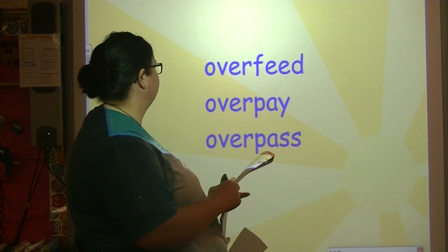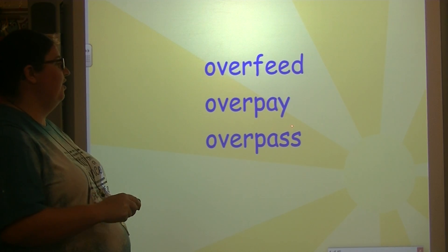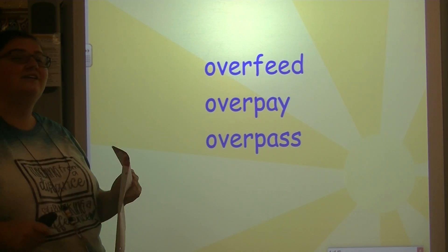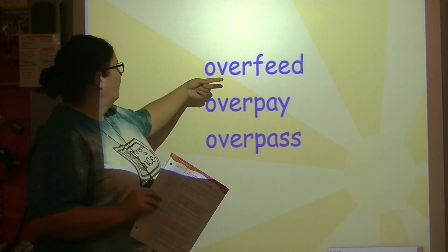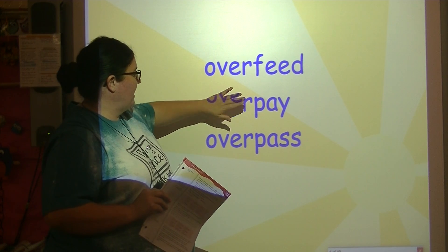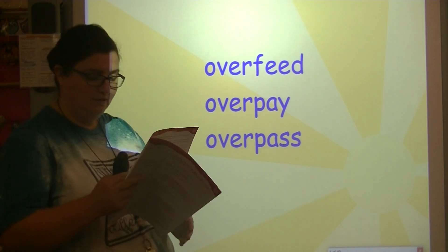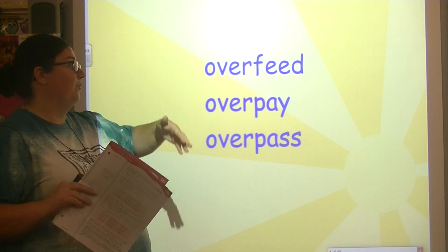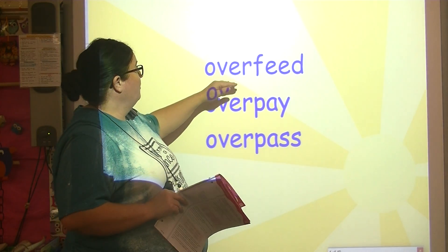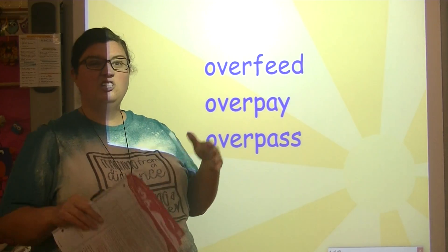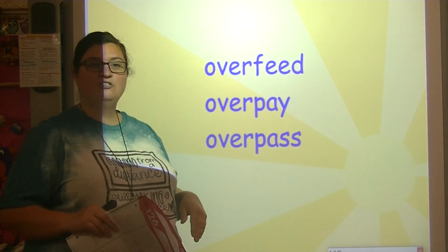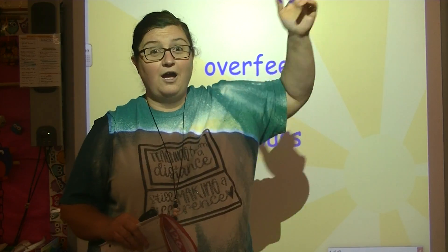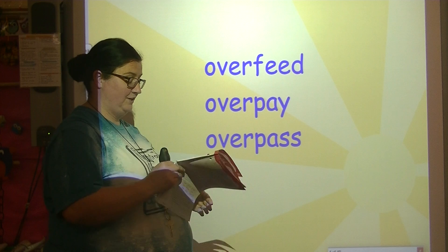Here's another set: overfeed, overpay, overpass. What is the prefix in these? Over — because if we cover it up, we have feed, pay, and pass. Same root words. What do you think 'over' may mean? Too much, or beyond, or above. So overfeed means you feed it too much, overpay means you paid too much, and an overpass is when you go on top or above.